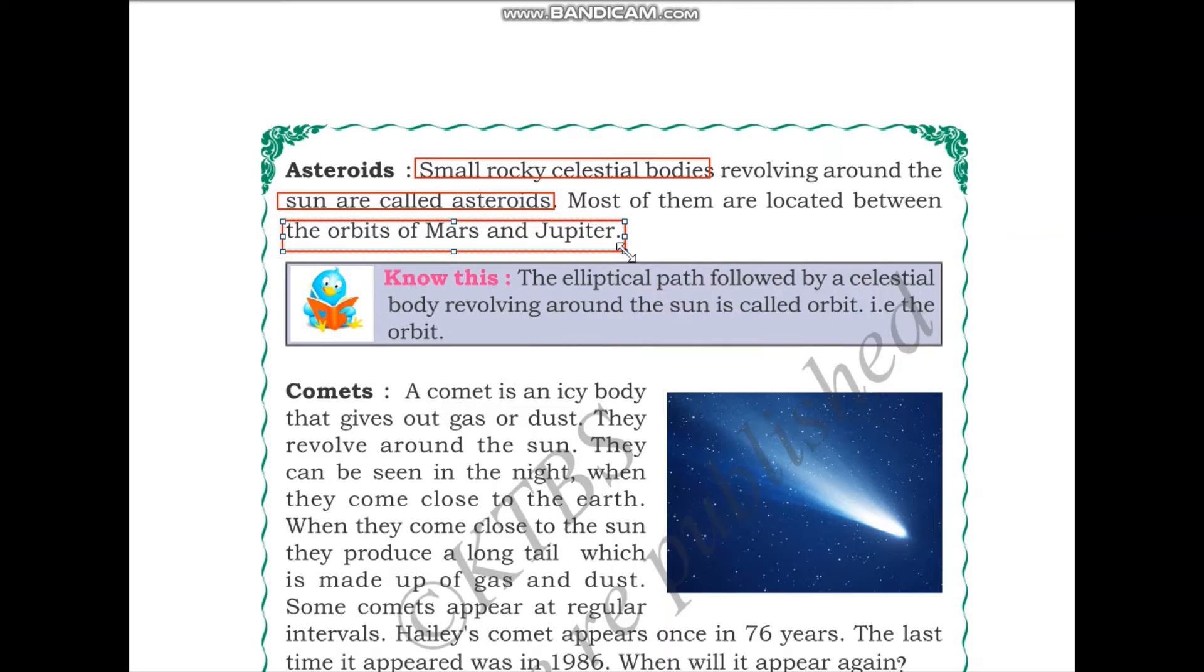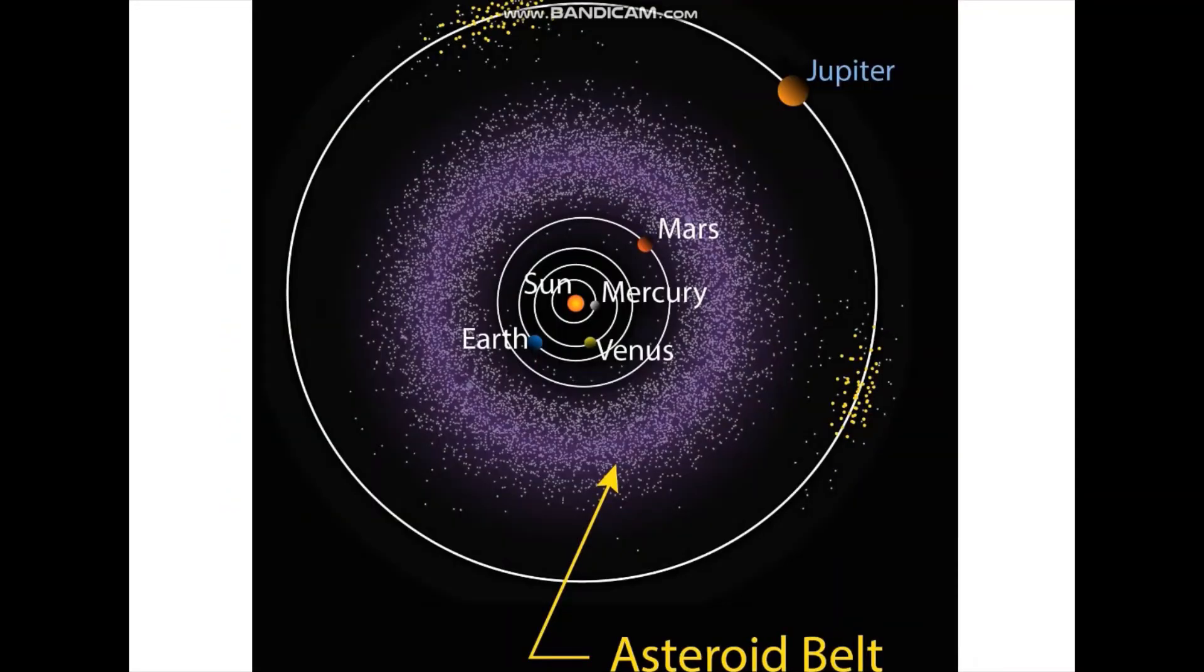In between the orbits of Mars and Jupiter, we have asteroids. Let us take a look at this. Here we can see the orbit of Mars and Jupiter. This one is the orbit of Mars. You can see Mars here. And this is the orbit of Jupiter. You can see Jupiter here. In between, you can see many tiny particles. Tiny when compared to the planets. You can see many particles. That is called asteroids. And this layer is called the asteroid belt.